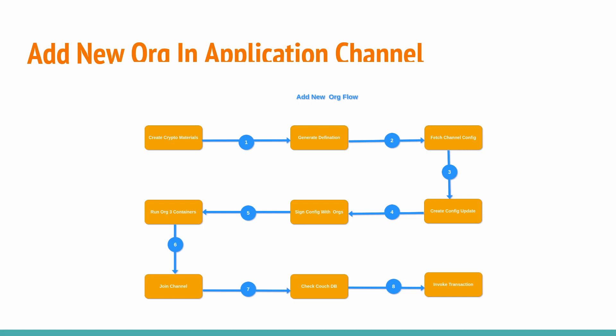After successfully submitting the update, we start the Org3 containers: the certificate authority, CouchDB, and the peer container. For the third organization we are considering only one peer, though you can add two if you want. Once the containers are running, we fetch the channel block and join the new peer organization to the channel. After joining, we verify that all data previously added in Section 1 is synced with this new organization's peer in CouchDB, and then add new transactions to check that CouchDB is being properly updated.